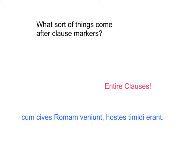So, in the following sentence — 'cum quis Romam venient, hostes timidi erant' — notice that after cum comes a verb, a subject, and not a dative but a place-to-which accusative, and then there's a whole other clause over here. We have two clauses. Where's our clause marker? It's cum.